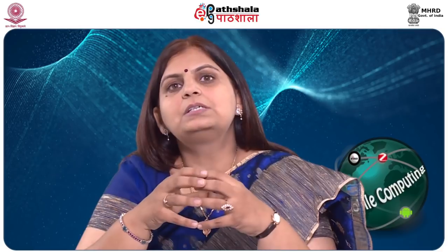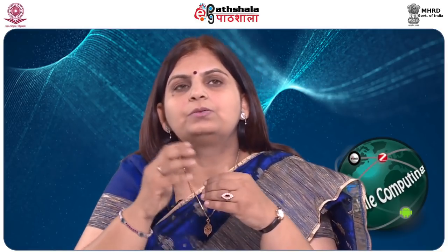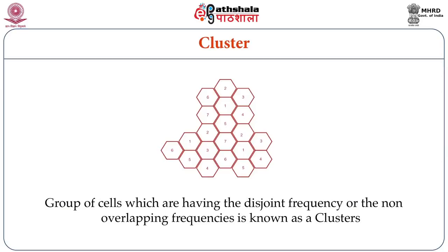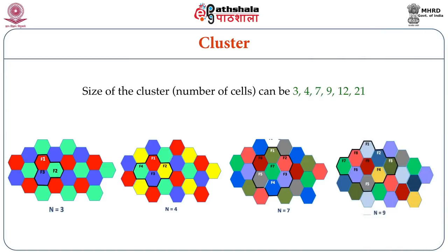Since the antenna transmission reaches only a particular distance, the same frequency can be given to another cell at a sufficient distance. The group of cells having non-overlapping frequencies is known as a cluster. This cluster can be repeated systematically so that two cells having the same frequency are far away from each other. The size of the cluster — the number of cells forming the cluster — can be 3, 4, 7, 9, 12, 21, and so on. These are not arbitrary numbers; there is a particular approach behind why cluster sizes take these specific values.